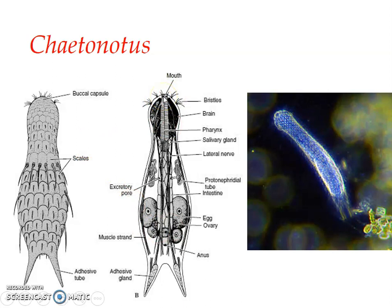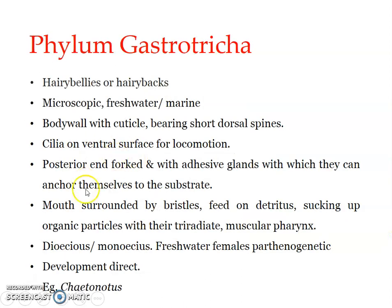Gastrotricha can be dioecious or monoecious — reproduction can be sexual or asexual. Most marine species reproduce sexually as they are hermaphroditic, but almost all freshwater species reproduce asexually by parthenogenesis. Locomotion is by ciliary gliding due to locomotor cilia on the ventral surface. Gastrotricans feed on bacteria, protozoa, and fungi.